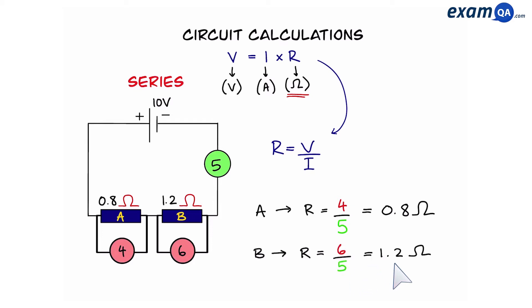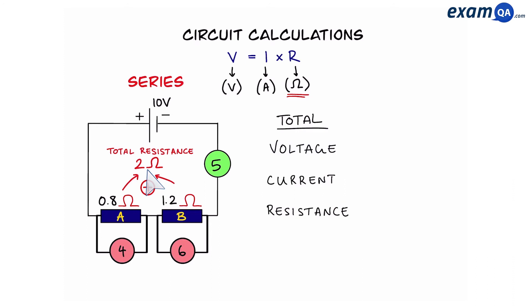Now we've managed to work out the resistance of A and B. However what about the resistance of the whole circuit? So all we have to do is add them together. 0.8 plus 1.2 gives us 2 ohms and that is the total resistance in this circuit. So to summarize voltage and resistance are shared. That means you have to add up all the individual voltages and resistances to work out the total. Current on the other hand is the same everywhere.